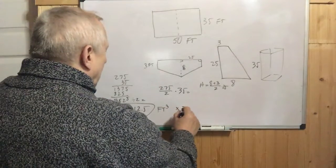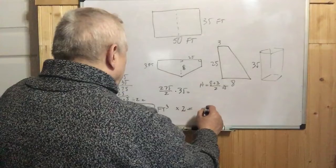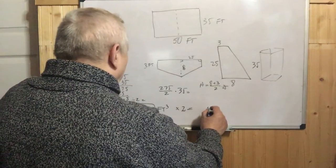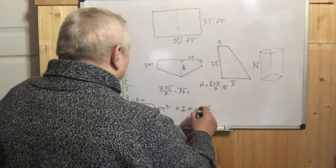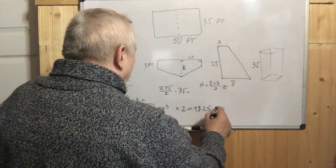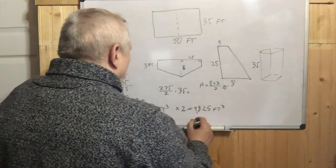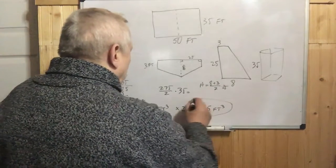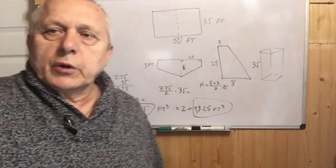So the whole pool will be double that. Let's see how much this is - 9825 cubic feet. So this is the result. Thanks for watching. That's an interesting problem.